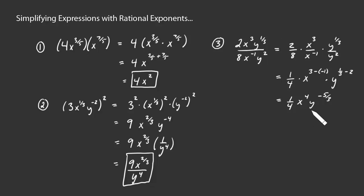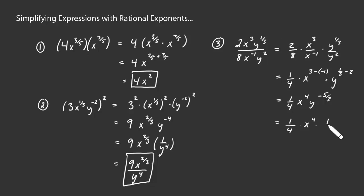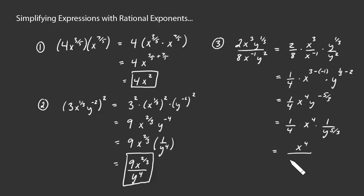We want to avoid leaving negative exponents in our answer. We can think of y to the negative 5 thirds as 1 over y to the positive 5 thirds. Putting it all together as a fraction, we have x to the fourth on top, and 4 times y to the 5 thirds on the bottom. That's our answer.